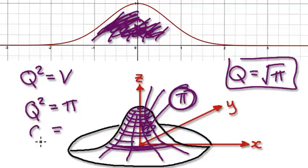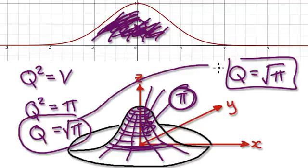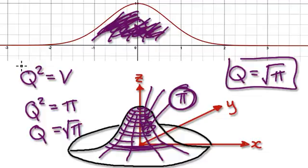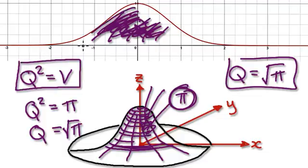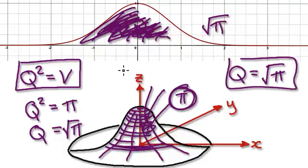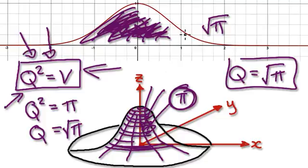If you square root both sides, Q equals the square root of pi. So this thing here is the same as this. The point I'm trying to make is, if we can verify this, then we know that the area underneath this graph will equal the square root of pi. Our job here is to verify this.